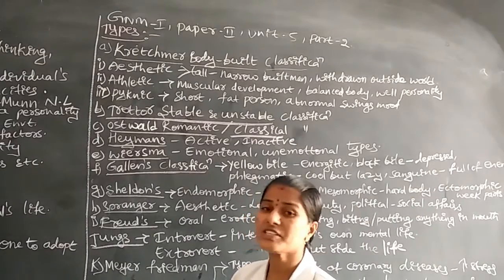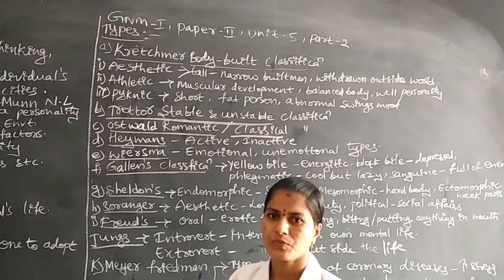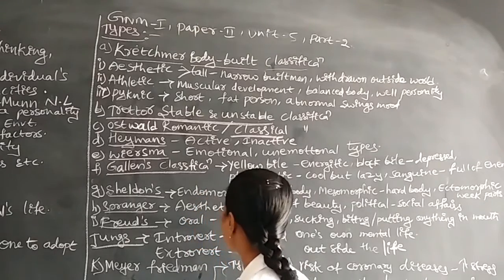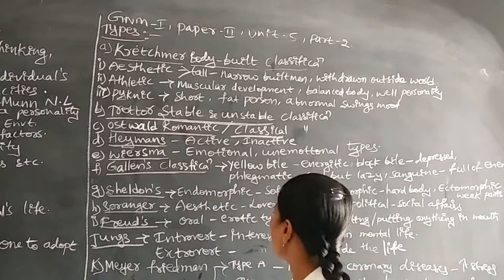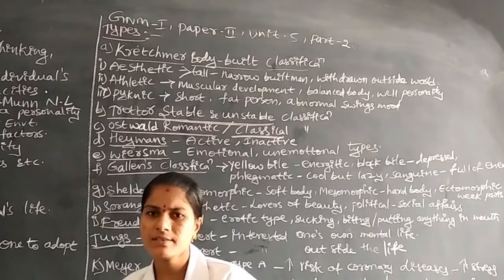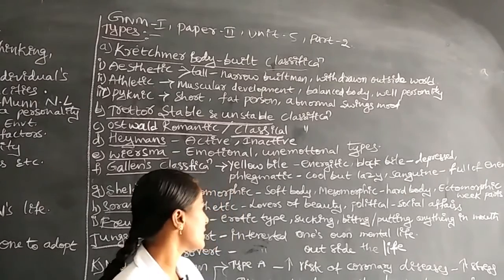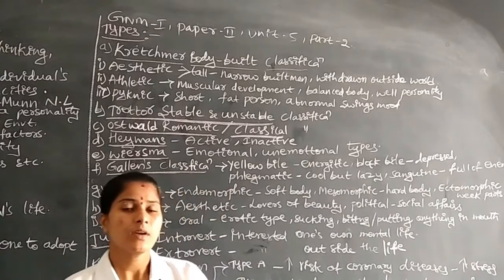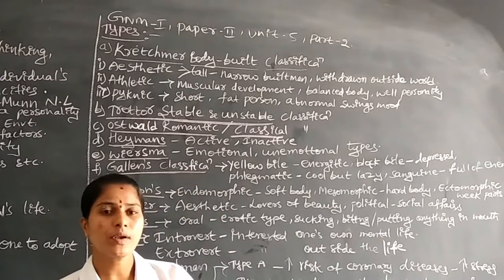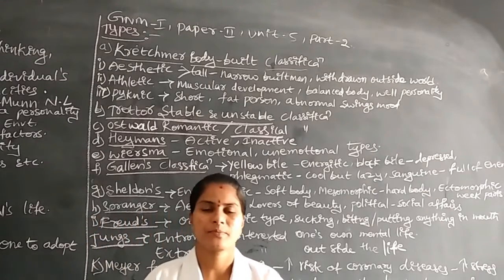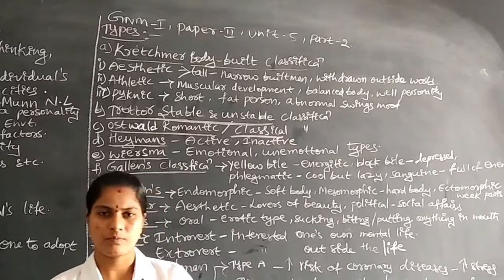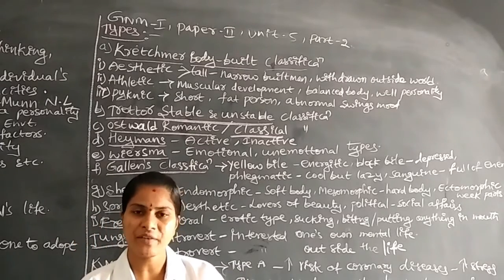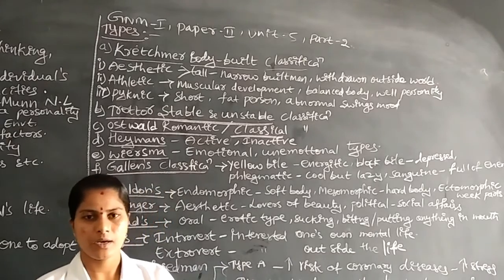Next is Spranger's classification. In this, the first type is the aesthetic personality — persons who are lovers of beauty. They always have good love and affection for beauty. If a body is very beautiful, they have good love and affection for that particular beauty.